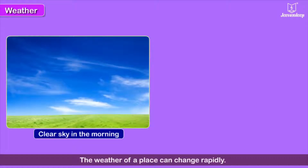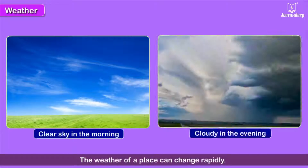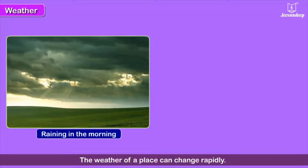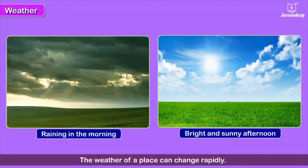It may be bright and sunny with a clear sky in the morning, while in the evening the sky may be covered with dark clouds. It may start raining in the morning, but the afternoon may be bright and sunny.